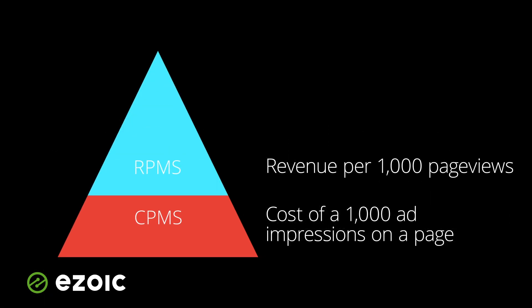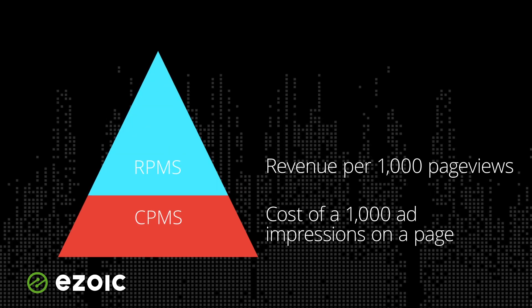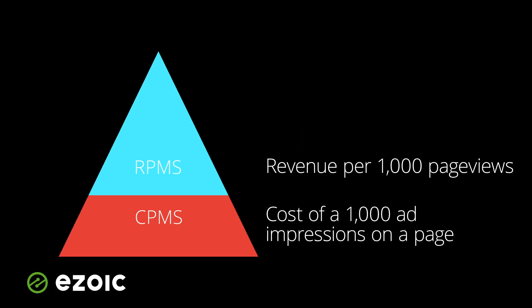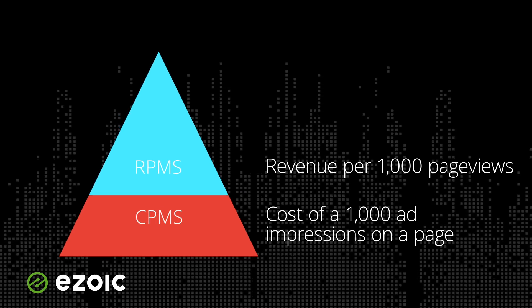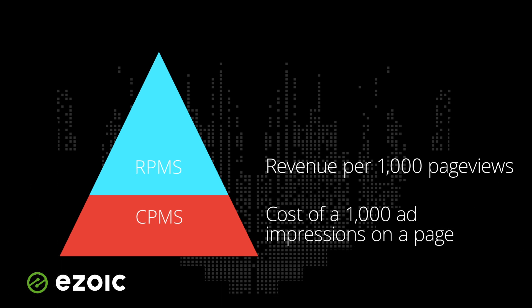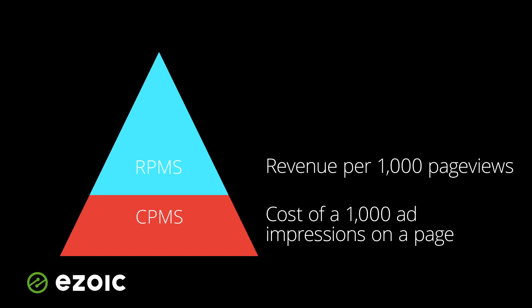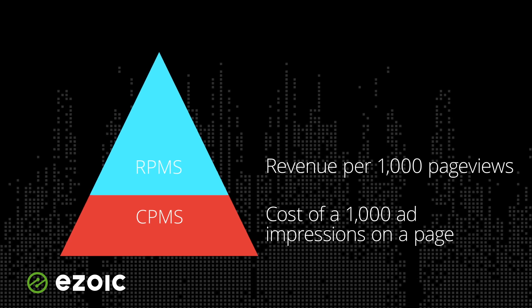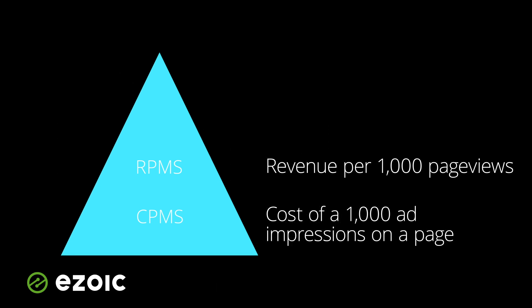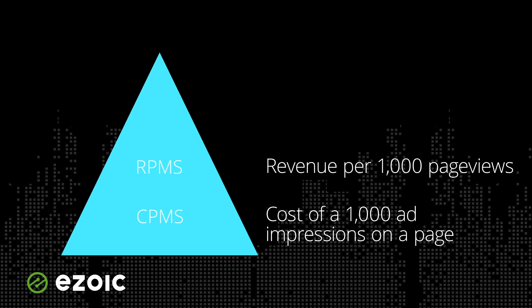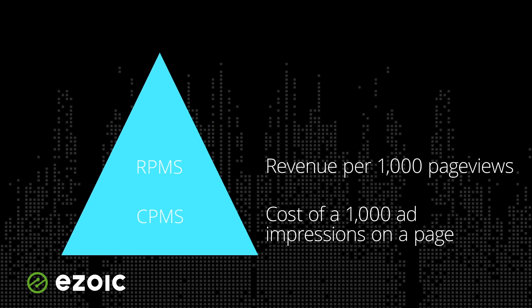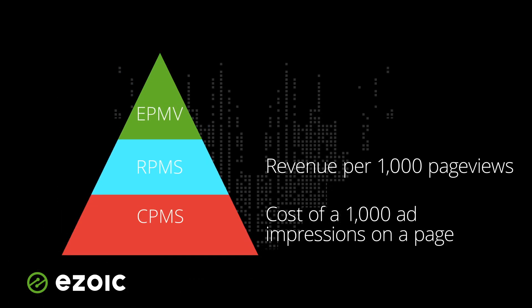RPMs are revenue per 1,000 page views earned by a publisher. This is a measure that is calculated by dividing estimated earnings by 1,000 page views. A website's average RPM includes the cumulative total of all the CPMs on the page views used in the RPM calculation.